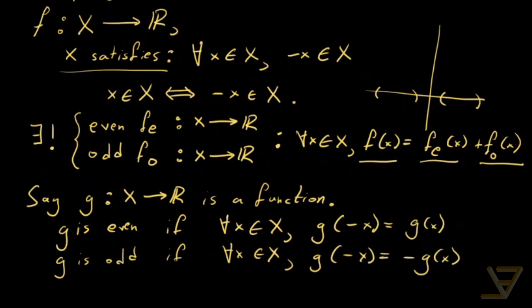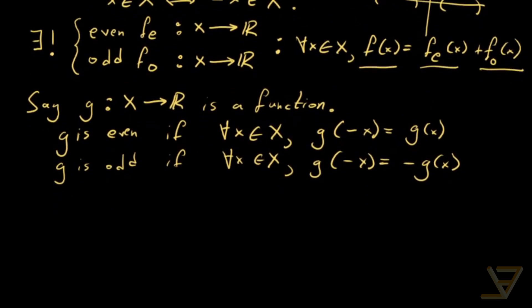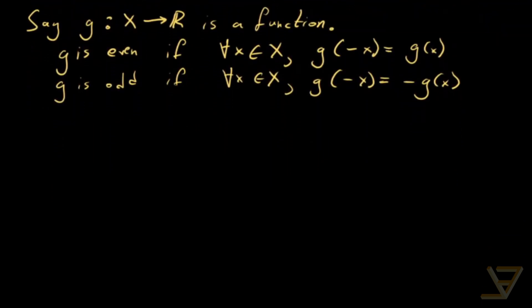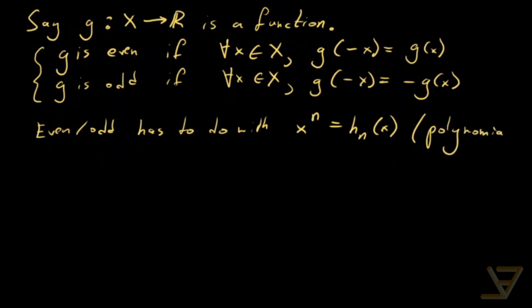Now, you might be wondering about the terminology and the motivation behind these definitions. So I'll quickly mention to you what's going on. The even and oddness has to do with x to the n. Let's say h_n of x. So this is a polynomial. You can research this on your own that this is even or odd depending on the evenness and oddness of the degree n.